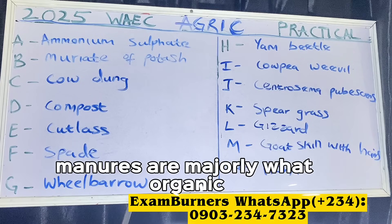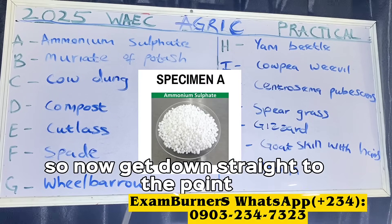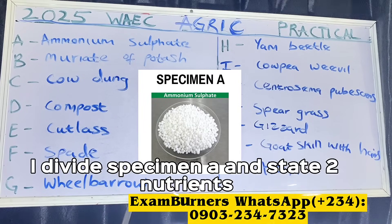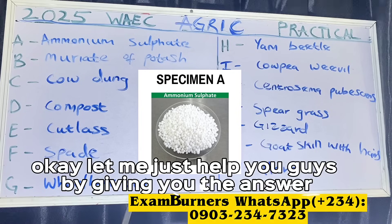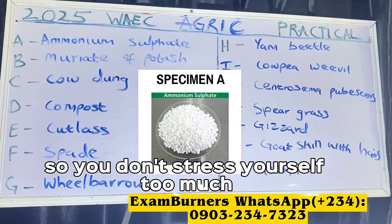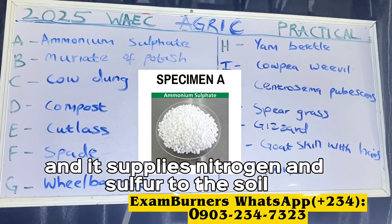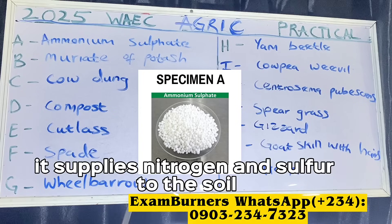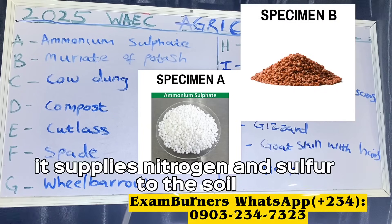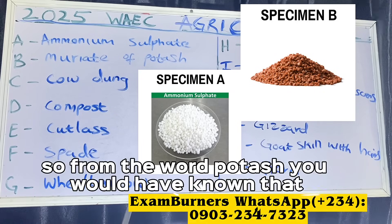Identify specimen A and state two nutrients it supplies to the soil. Specimen A is ammonium sulfate and it supplies nitrogen and sulfur to the soil. Specimen B is muriate of potash — from the word 'potash' you would have known that muriate of potash supplies majorly potassium to the soil.